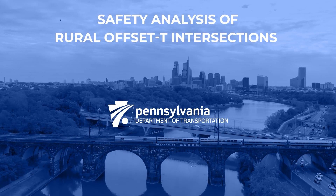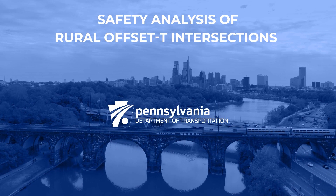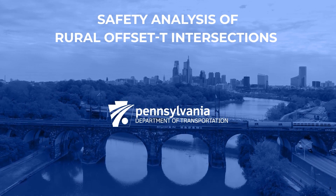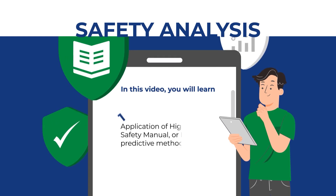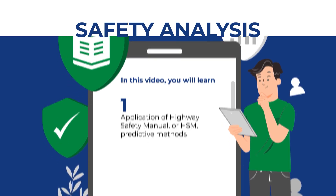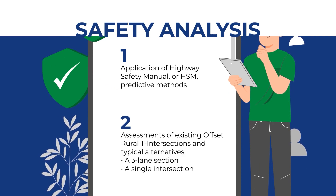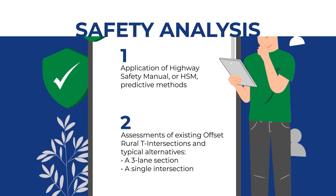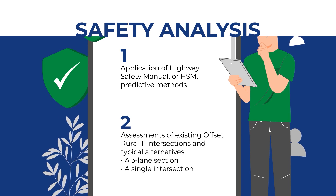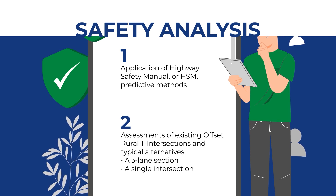Welcome to an overview of the Safety Analysis of Rural Offset T-Intersections, presented by PennDOT, the Pennsylvania Department of Transportation. In this video, you will learn the application of the Highway Safety Manual, or HSM, predictive methods for assessments of existing offset rural T-intersections and typical alternatives for improvements, such as creation of a three-lane section or realignment into a single intersection. The analysis involves multiple tools rather than a typical use of PennDOT's HSM A and B tools.